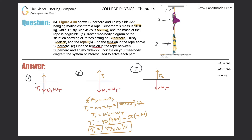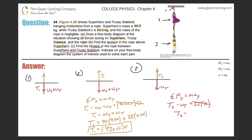Part C asks for the tension between the superhero and trusty sidekick, which is T2. Looking at just trusty sidekick: the sum of forces in the y-direction equals his mass times acceleration. T2 minus his weight equals 55 times zero, so T2 equals just the weight of trusty sidekick. T2 = 55 × 9.80 = 539 newtons, to three significant figures.